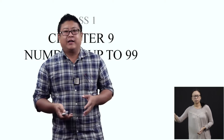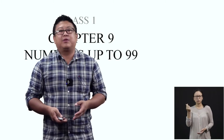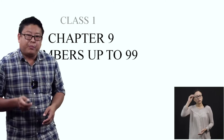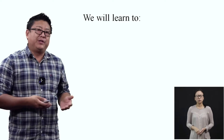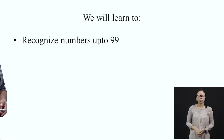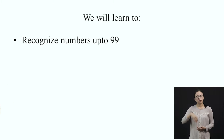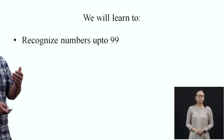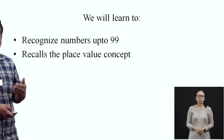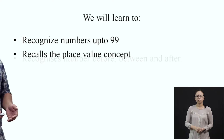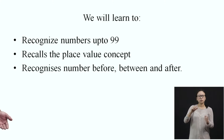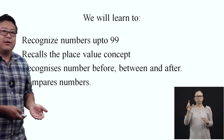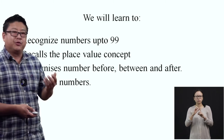So far, we have studied single digit and two digit numbers. Today, we will study about numbers up to 99. To begin with, let us look at what we are going to learn after going through this lesson. First, we will recognize numbers up to 99. We will also recall the place value concept. We will recognize numbers before, between, and after, and compare numbers.